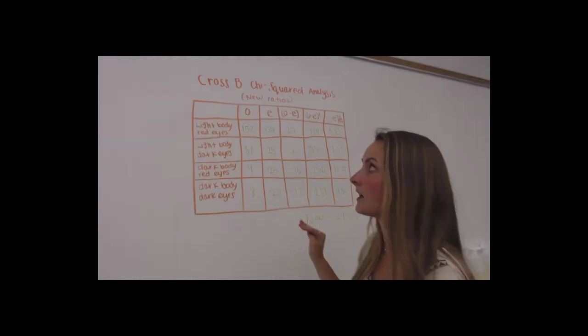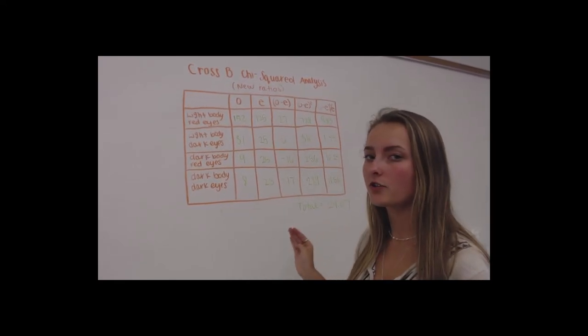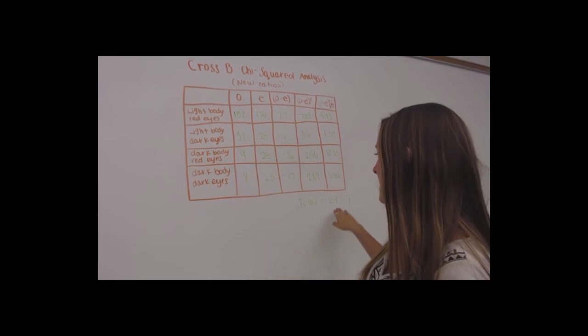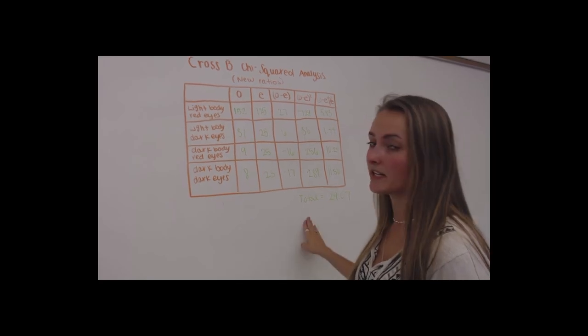Additionally, our Cross B chi-square analysis test with our new ratios also showed similar results to our A result. It has a high chi-square value and a very low p-value, which means that we are also going to reject our null hypothesis.